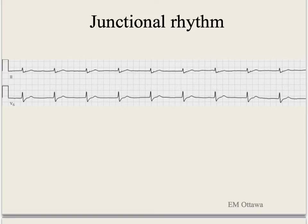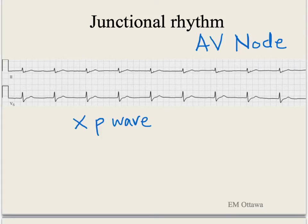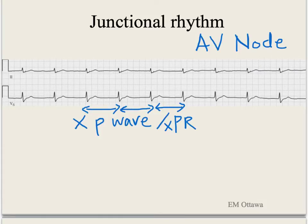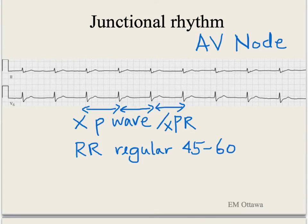This next rhythm is a junctional rhythm. Junctional rhythm originates in the AV node — because of that, there will be no P wave and hence no PR interval. Since there are no P waves, there is also no relationship between the P wave and the QRS complex. The RR interval looks regular, and the rate should be between 45 to 60. The QRS complex is narrow.